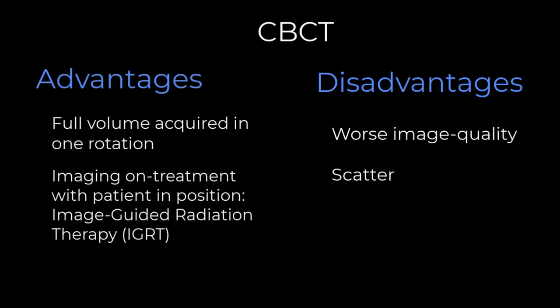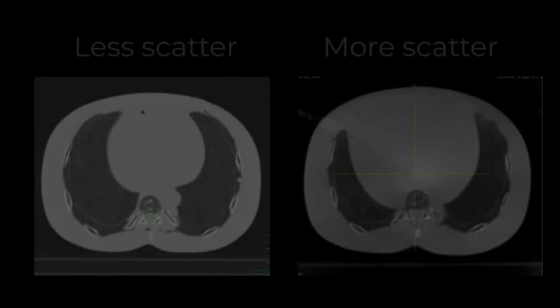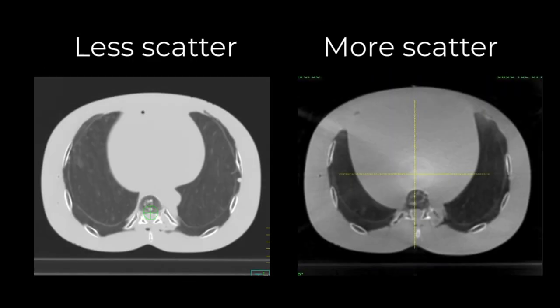Another disadvantage is that the patient can move during the scan. The cone beam acquisition takes a full minute if you go all the way around, and so the patient might move during that time. Here you can see this effect on a phantom study, with fan beam geometry on the left and cone beam on the right, showing the image quality differences largely because of the scatter.